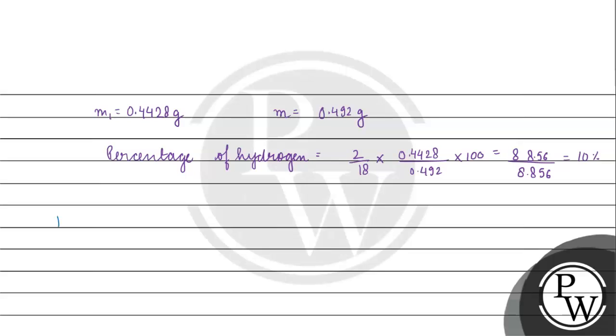Now the percentage of oxygen. Because our compound only contains carbon, hydrogen and oxygen, what is the percentage of oxygen? It is 100% minus the percentages of carbon and hydrogen. That is 100 minus 10% plus 44%, which gives us 46%. The percentage of oxygen in our organic compound will be 46%.